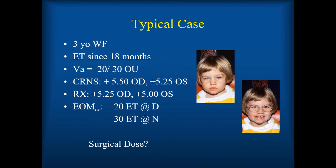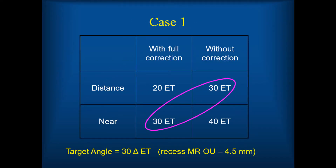This is why it's so important to measure all of your accommodative esotropes with and without correction, both at distance and near — you need all four of those numbers to plan. Here's a typical case: a three-year-old girl with esotropia since 18 months, equal vision, moderate to high hyperopia in both eyes. We treat her with glasses and have a residual esotropia: 20 prism diopters at distance with correction and 30 prism diopters at near. Using my algorithm, the mean of near with full correction (30) and distance without correction (measured as 30) gives a target angle of 30 prism diopters — on the table I use from Marshall Parks, published in my atlas, that's 4.5 millimeters.